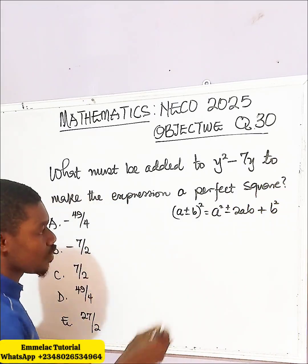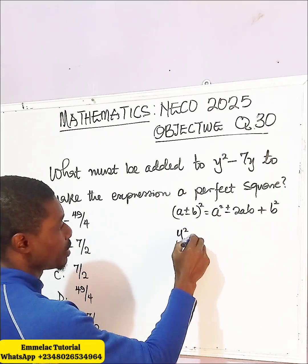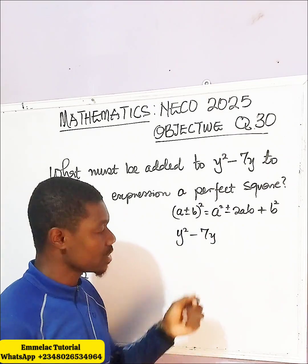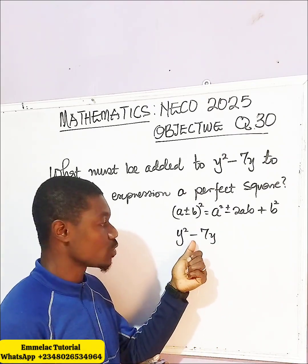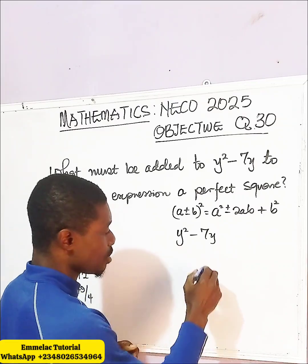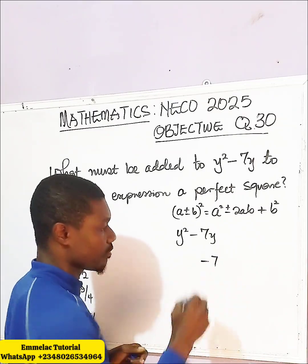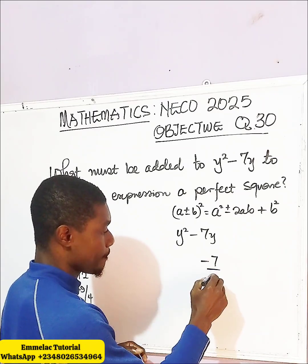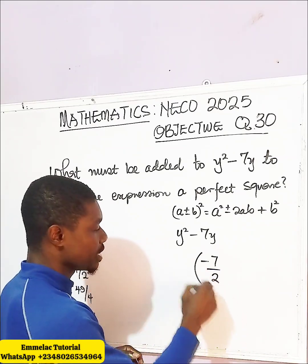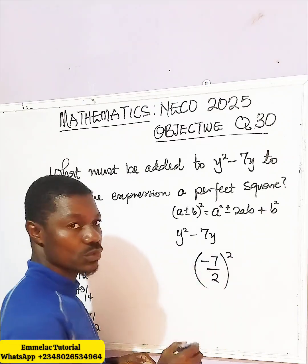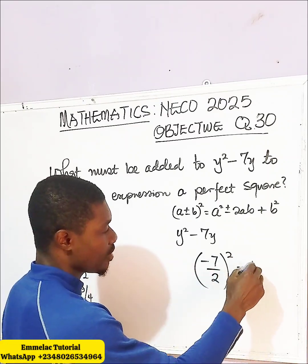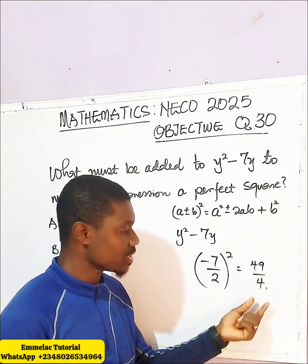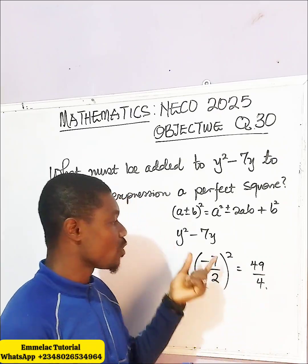So how do we go about it? We have y squared minus 7y. Take the coefficient of y, which is negative 7, then divide this coefficient by 2, and raise it to the power of 2. So we end up having 49 over 4.